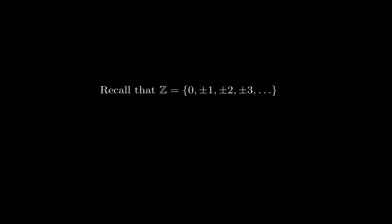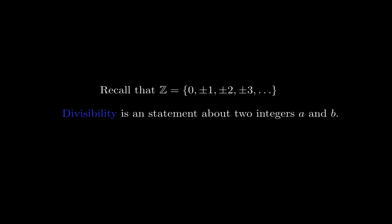Before going into the definition and talking about the specifics, I want to recall a couple of things. First, the integers are symbolized with this letter here — zero, plus or minus one, plus or minus two, and so on. Also, divisibility is a statement about two integers. That's going to be important because divisibility is not a computation, it's not a number — it's just a statement, and as such, a statement is either true or false.